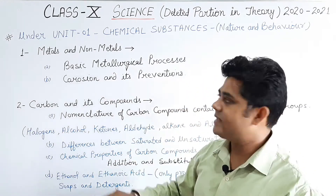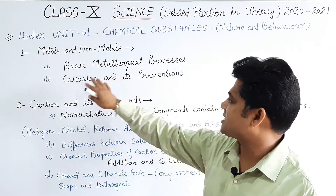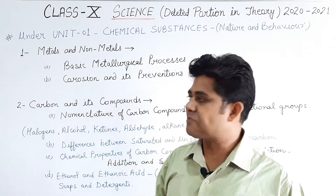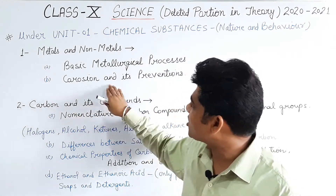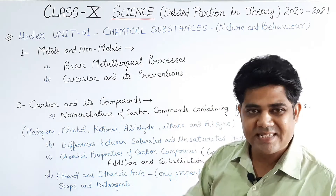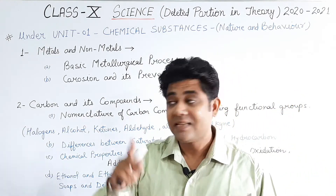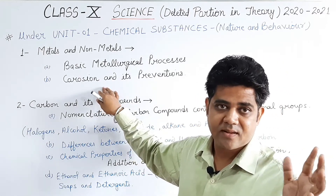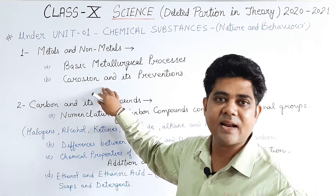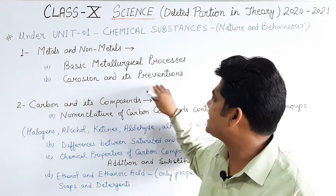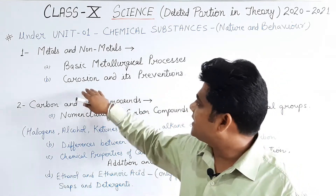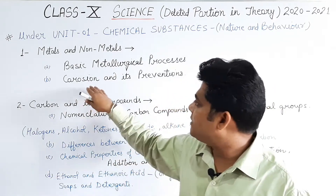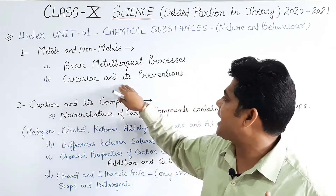I again repeat: all the basic metallurgical processes are deleted. Secondly, in this chapter, corrosion and its prevention is also deleted. Corrosion is given at the end of the first chapter as well, and that too is removed. So from Metals and Non-Metals, basic metallurgical processes and corrosion and its prevention are deleted.